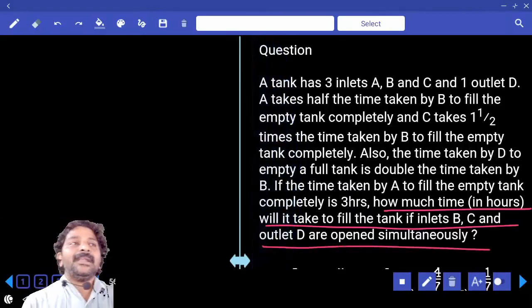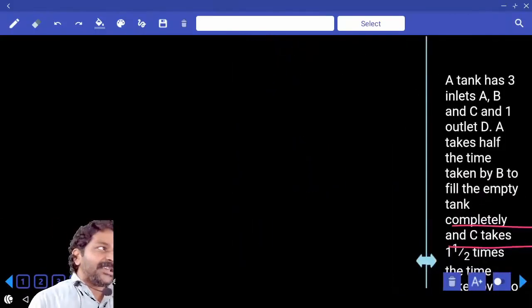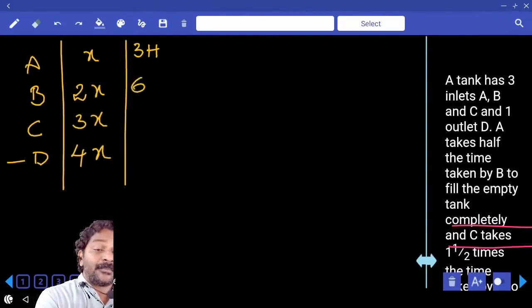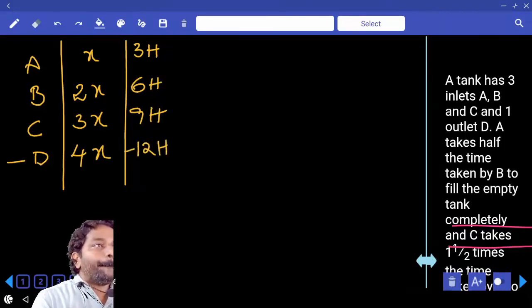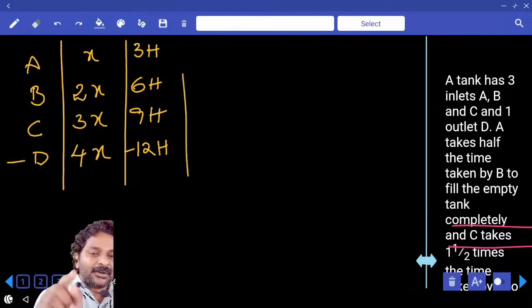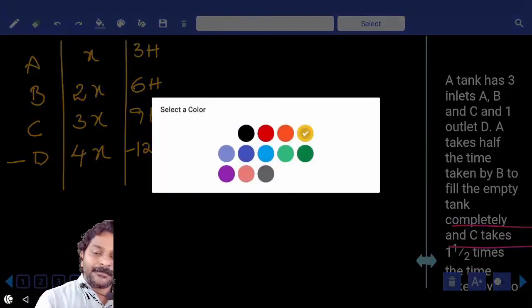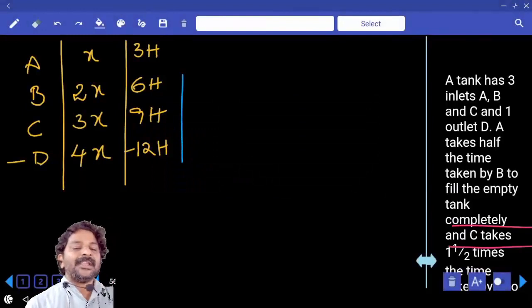If x equals 3 hours, then 2x is 6, 3x is 9, and 4x is 12, which is an outlet. Which taps are open now? B, C, D. So I will consider only these three: 6, 9, 12. Taking the LCM... LCM is 36 units. B can fill...